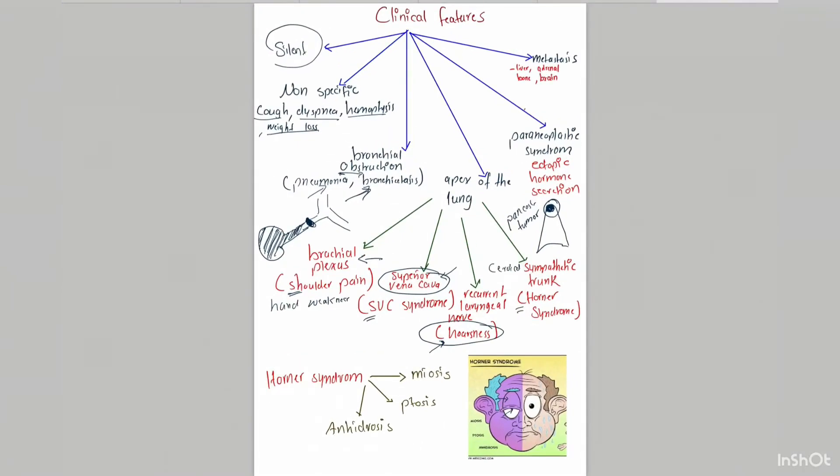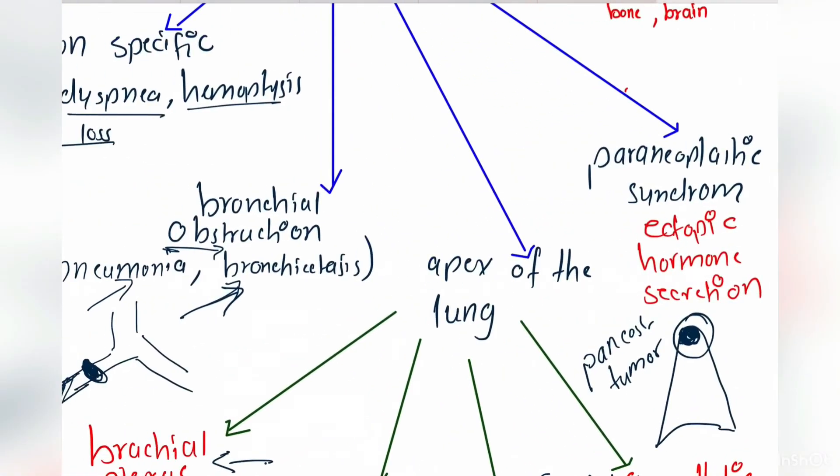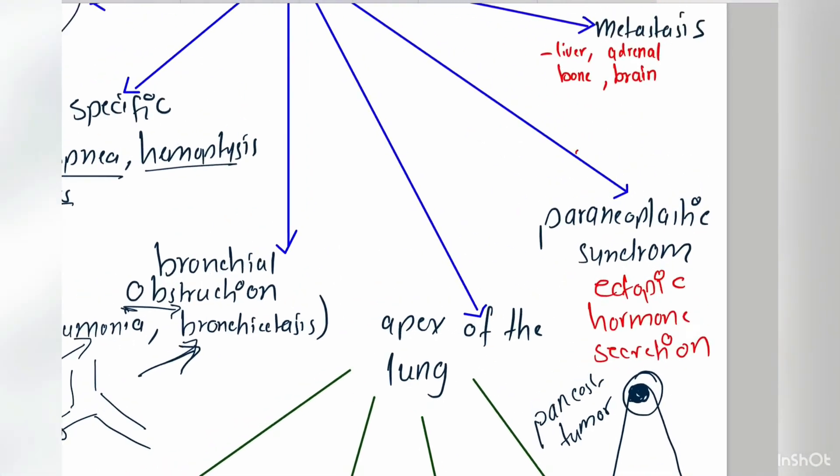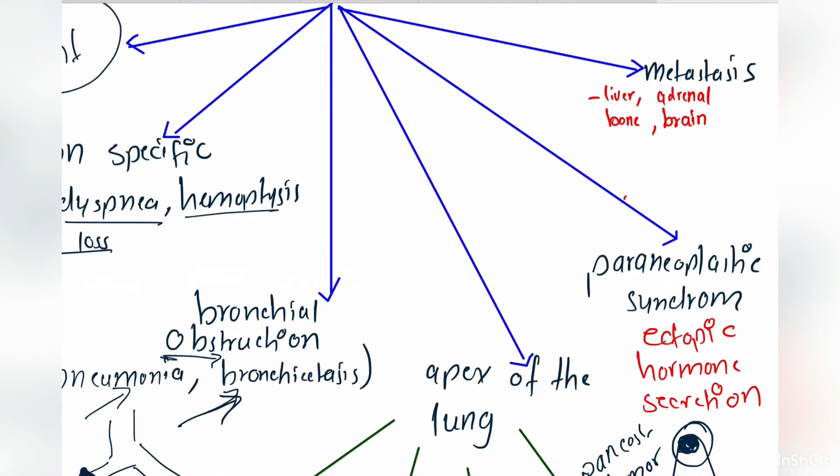Other groups of signs and symptoms may be due to paraneoplastic syndrome. Another group of signs and symptoms may result from metastases. Pulmonary tumor reaches the brain, metastasizes to the liver, adrenal, and bone, and presents with hepatomegaly, bone pain, confusion, or any cerebral disorder.